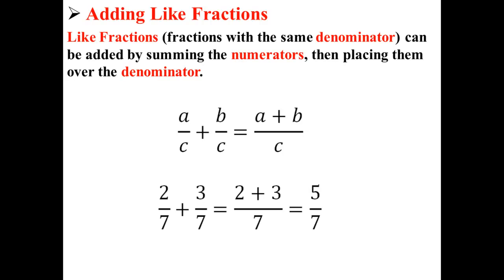Here's an example. If we want to add 2 over 7 plus 3 over 7, that's simply 2 plus 3 over 7, or 5 over 7.